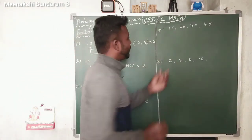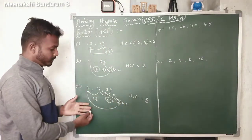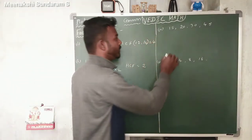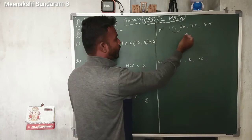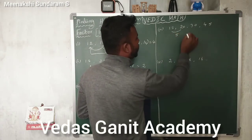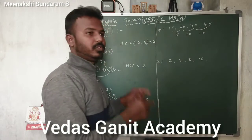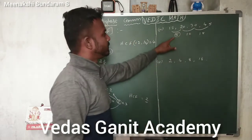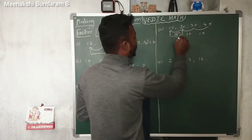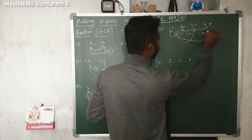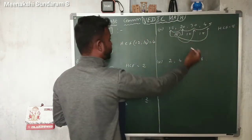We can go to the next example: 15, 20, 30, 45 — four numbers. The same method applies for 4 numbers. Find the difference of consecutive numbers. The difference of 15 and 20 is 5. The difference of 20 and 30 is 10. The difference of 30 and 45 is 15. The smallest difference is 5. Check: 5 divides 15, 5 divides 20, 5 divides 30. So the HCF of this set of numbers is 5.